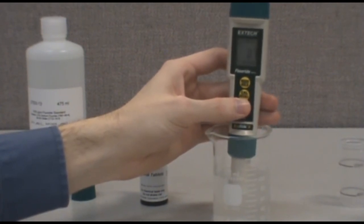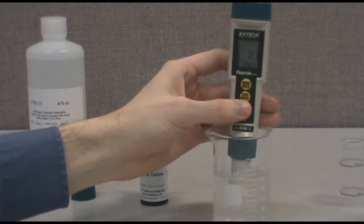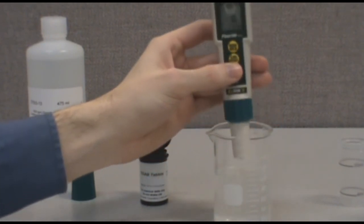The meter can be stored wet or dry. It is recommended that it be stored wet in the last solution used. If stored dry, it will be necessary to soak the meter in fluoride solution for 15 minutes before its next use.